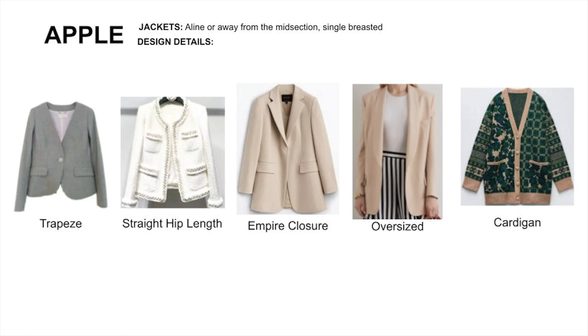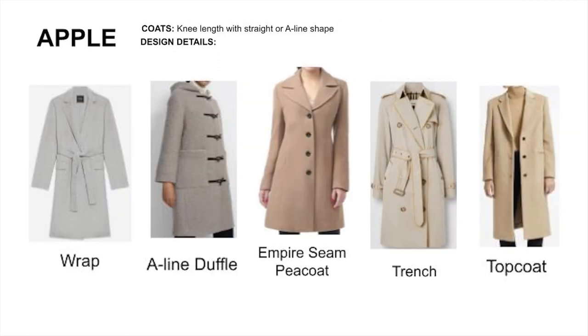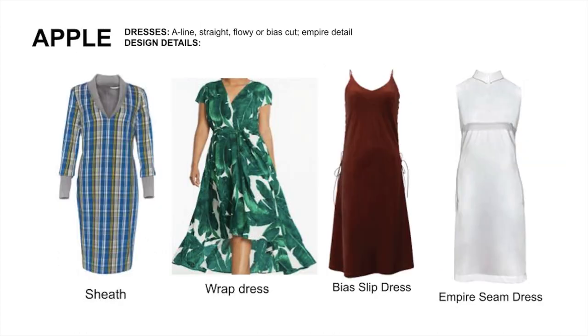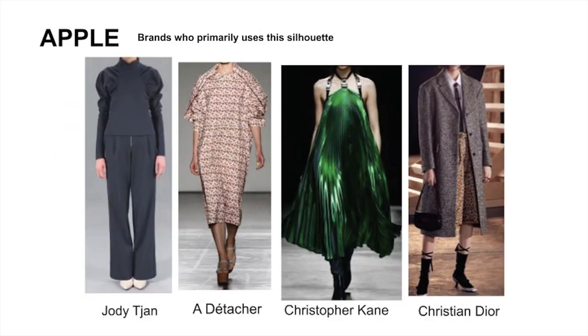For jackets, go with straight or flowy cuts to offset the midsection. For coats, straight or A-line cuts at the knee work best — create a waistline above the natural waist. For dresses, make sure to create a waistline above the natural waist. Here are some designers who design around this shape. This is the most difficult body shape to design around because it goes against everything that is the hourglass, which is held as ideal.